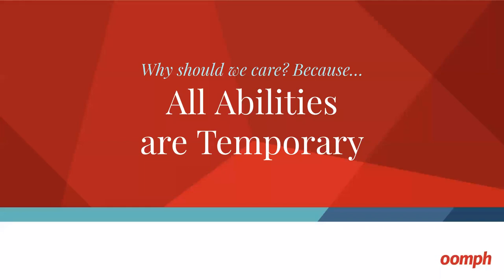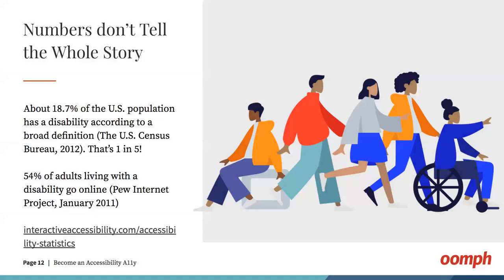The thing that we forget when talking about disabilities is that any one of us can become temporarily disabled. We need to think more broadly about accessibility because it's not just for a small subset of the population. According to the most recent census, 57 million Americans reported having a disability — that's one in five. About 8% have difficulty lifting or grasping, 6% have a cognitive condition, 3% have a severe vision impairment, and 3% have a severe hearing impairment. A little more than half of these folks go online regularly, and in this age where banking, healthcare, and work-related tasks are all online, that should not be a surprise.